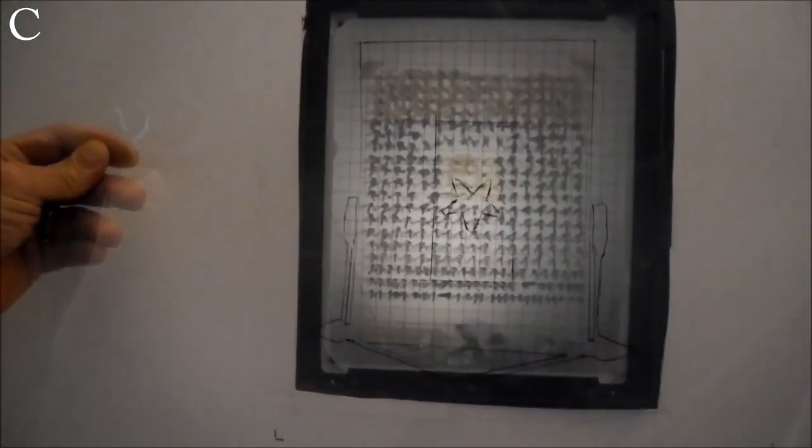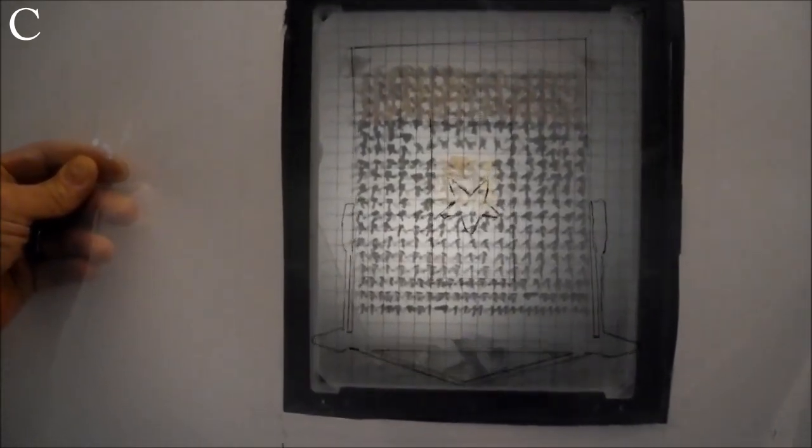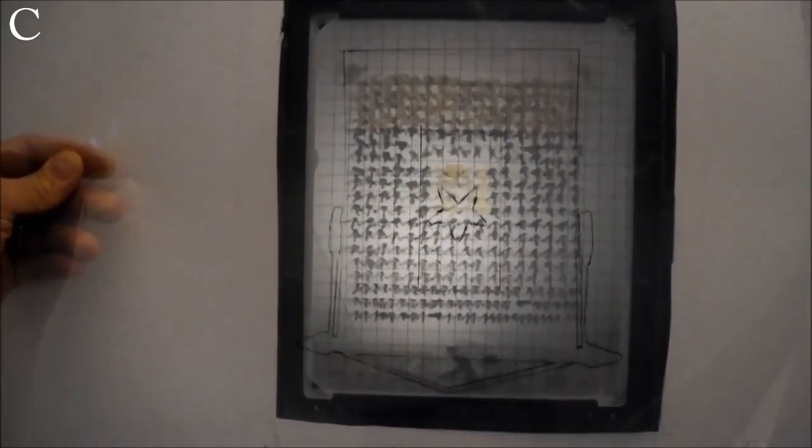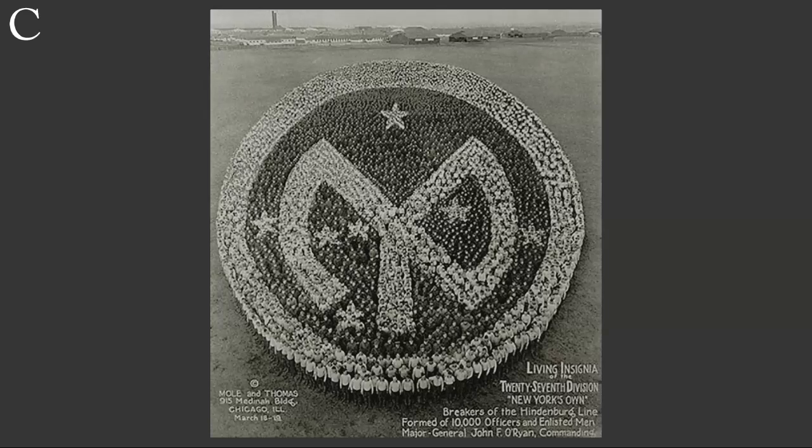While Mole looked through the camera, Thomas would be on the parade grounds as Mole yelled out instructions. Fastening a straight line would be easy, two spikes in the ground and a taut rope, but Giotto would have difficulty rendering this circle.